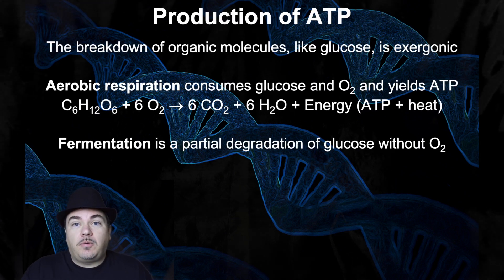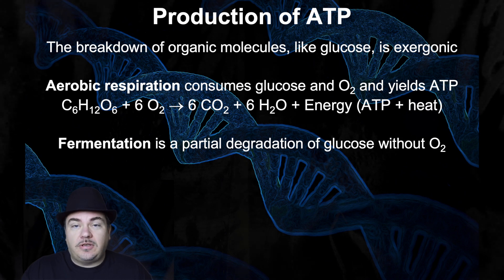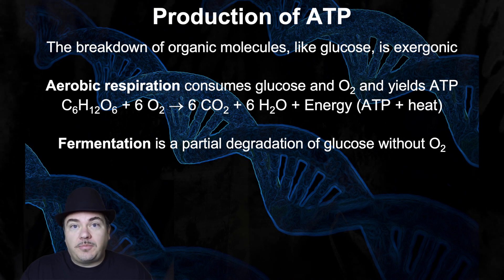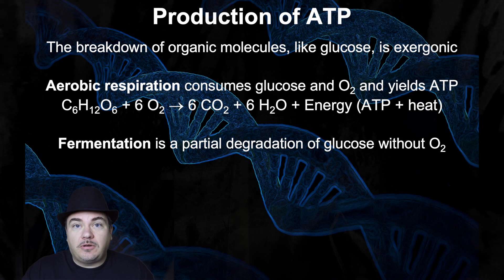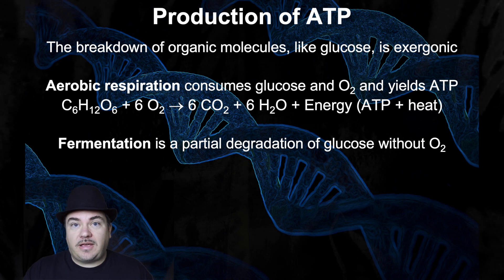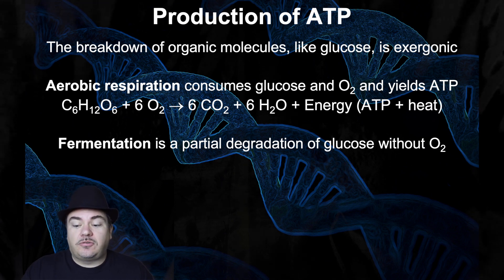The big picture is we want to take the energy that's in glucose and transfer that energy into the cell's rechargeable battery called ATP. So you're taking a large molecule of glucose — built out of six carbons — and breaking it down into much smaller molecules, carbon dioxide, where each one is only made out of one carbon. Since you're breaking it down, it's catabolic, which is going to be exergonic — it's going to be releasing energy. The cell is going to capture that energy to charge up ATP.